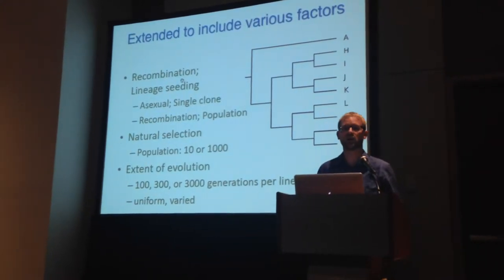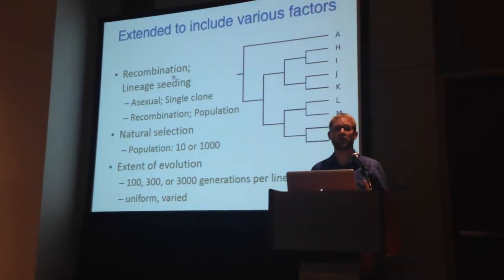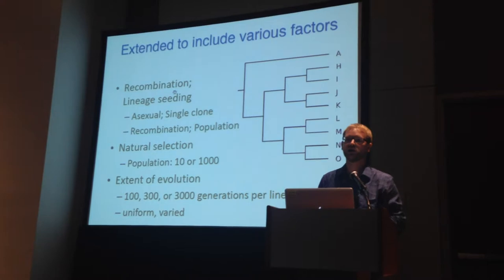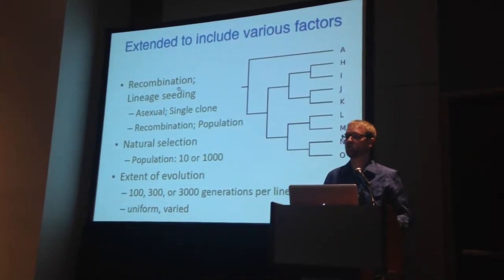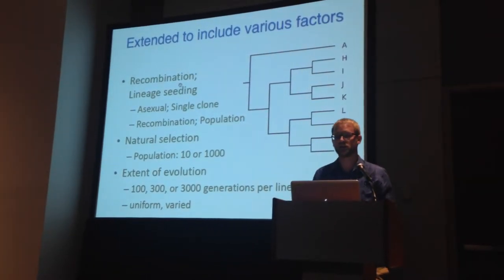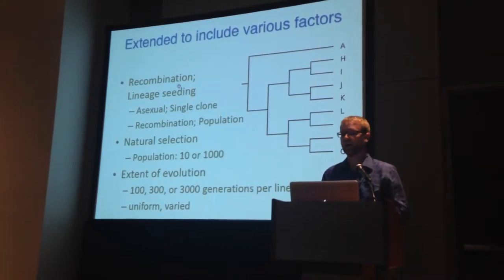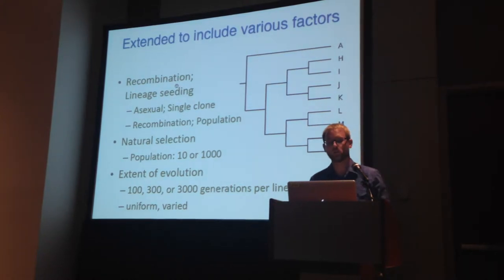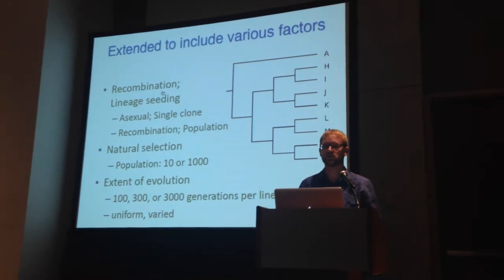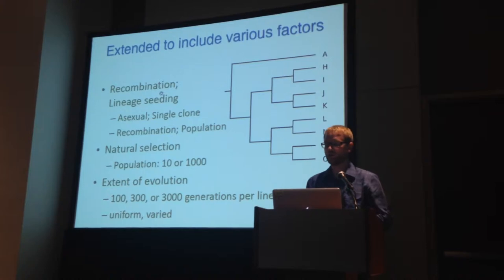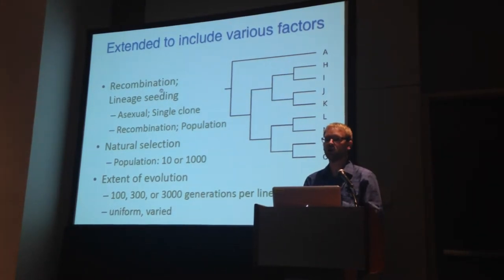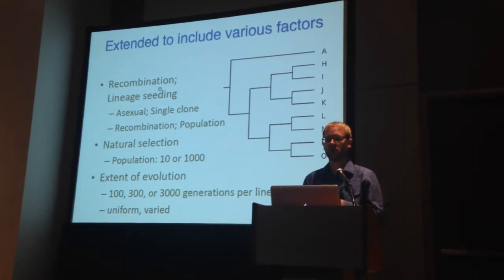We then extended this to include a number of other factors, such as recombination. With recombination, we also varied lineage seeding — how each of these lineages is seeded throughout the tree as we experimentally evolve these populations. Either asexual reproduction with no recombination, seeding each new lineage with a single clone or the most abundant genotype at the end of the previous lineage, or sexual recombination, cloning the entire population and seeding the lineages that way. We also introduced natural selection in different schemes and minimized or maximized the relative extent of genetic drift versus natural selection by changing the population size. We also varied the extent of evolution occurring across the tree — the number of generations per branch — either uniformly across all branches or varied per branch.